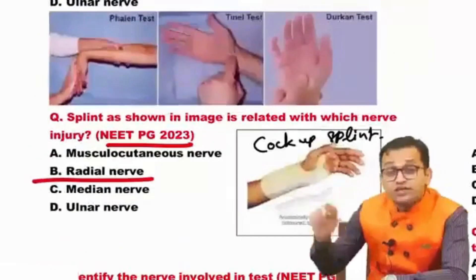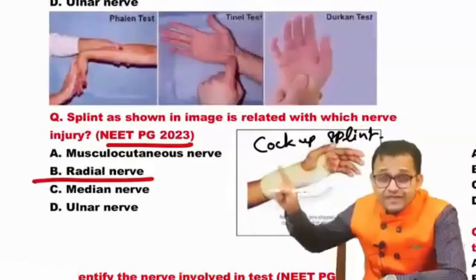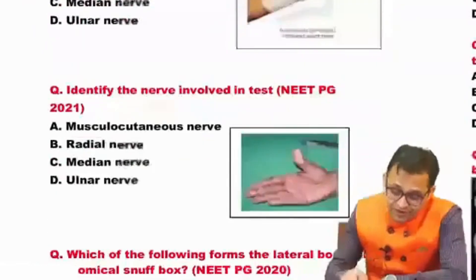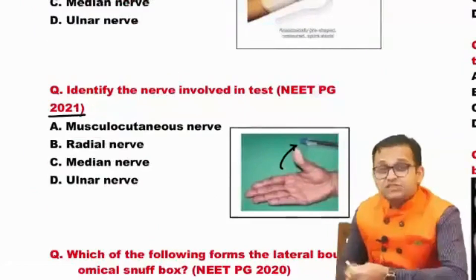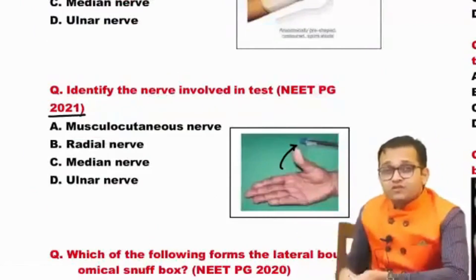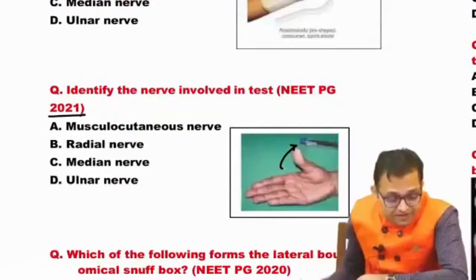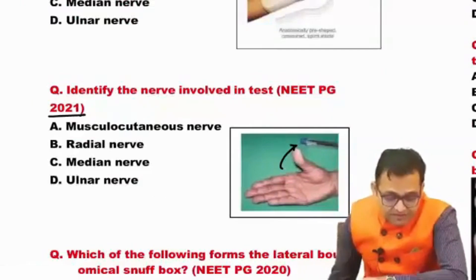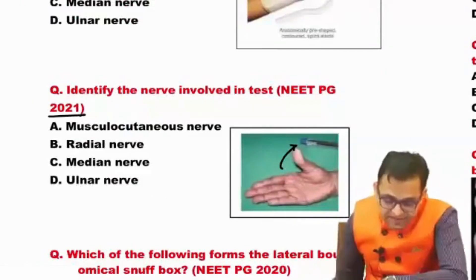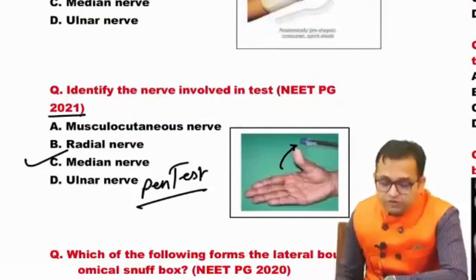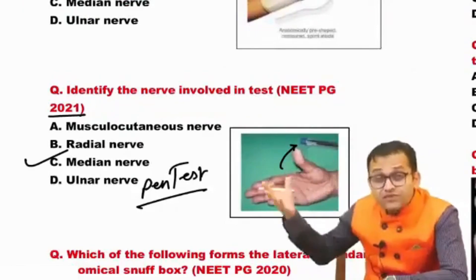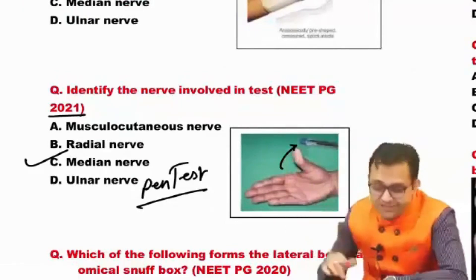Now we have to study the nerves and their clinical aspects. Next question, NEET PG 2021: identify this test — you are touching the palm with the help of the thumb. This is the pain test for the median nerve, so we have to study the nerves and their tests.